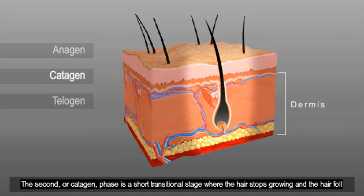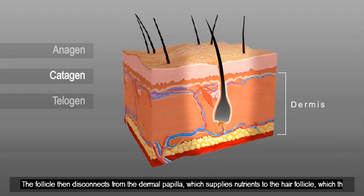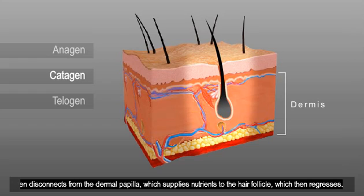The second, or catagen phase, is a short transitional stage where the hair stops growing and the hair follicle becomes smaller. The follicle then disconnects from the dermal papilla, which supplies nutrients to the hair follicle, which then regresses.